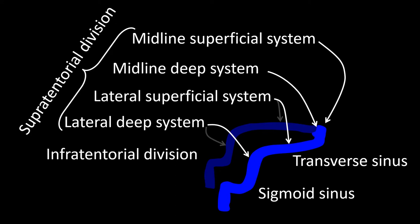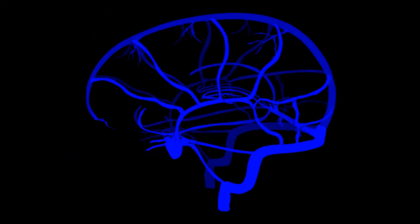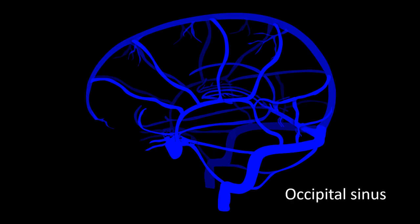Now that we have finished talking about the supratentorial division, we will talk about the infratentorial division. This division drains into the sigmoid sinus and into the confluence of the sinuses. To the supratentorial draining structures I am adding the main elements of the infratentorial division, including the occipital sinus. Other structures involved in drainage of the posterior fossa will be addressed shortly.